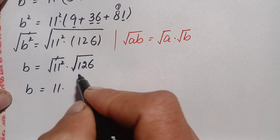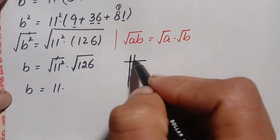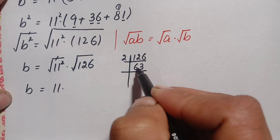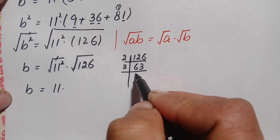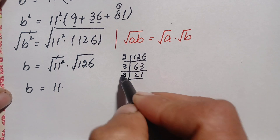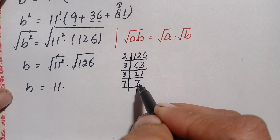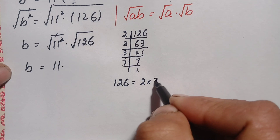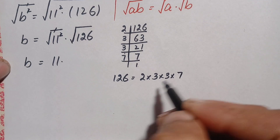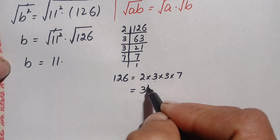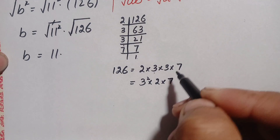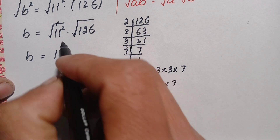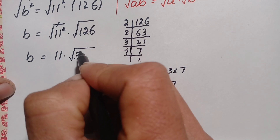Now we factorize 126. Since 126 is even, divide by 2: 126 = 2 × 63. Since 63 is divisible by 3: 63 = 3 × 21. Since 21 is divisible by 3: 21 = 3 × 7. So the prime factorization of 126 is 2 × 3 × 3 × 7, which we write as 3² × 14.